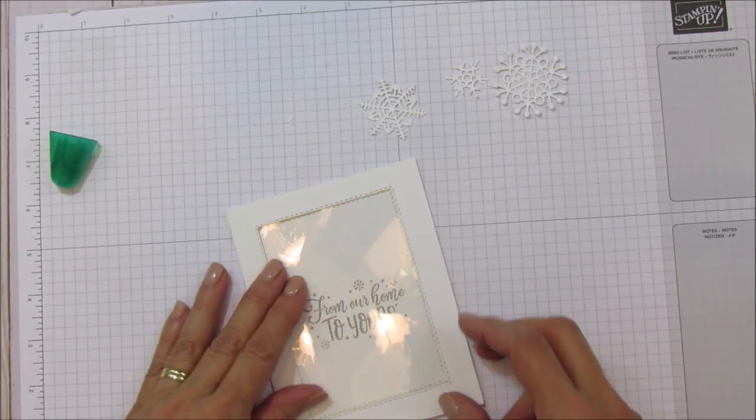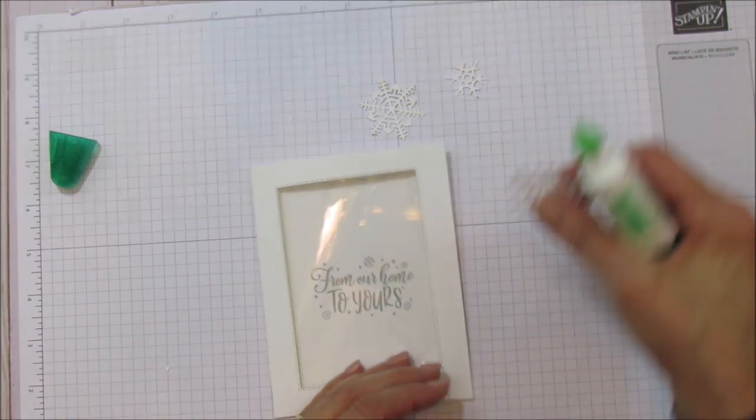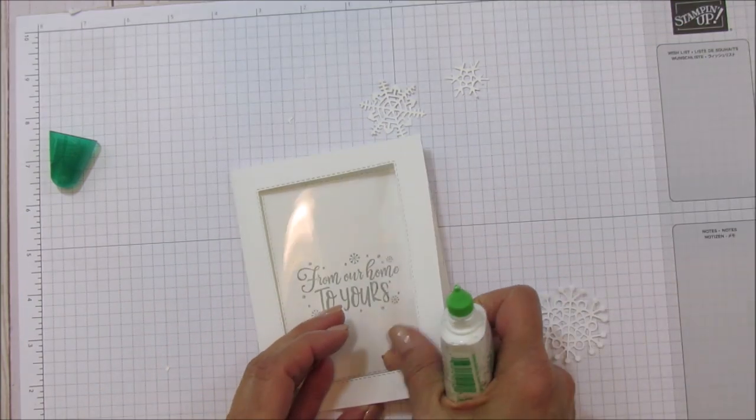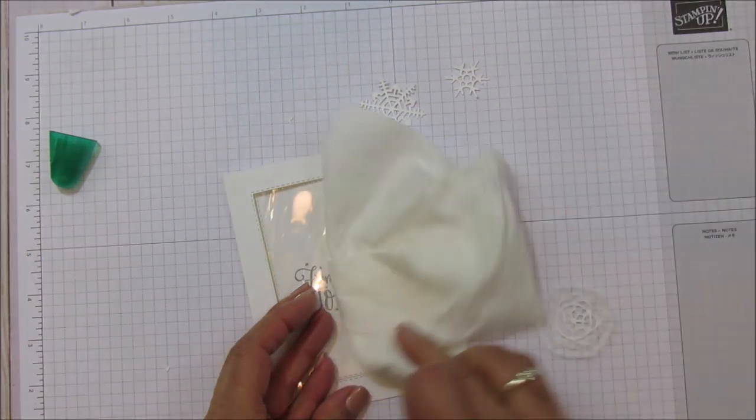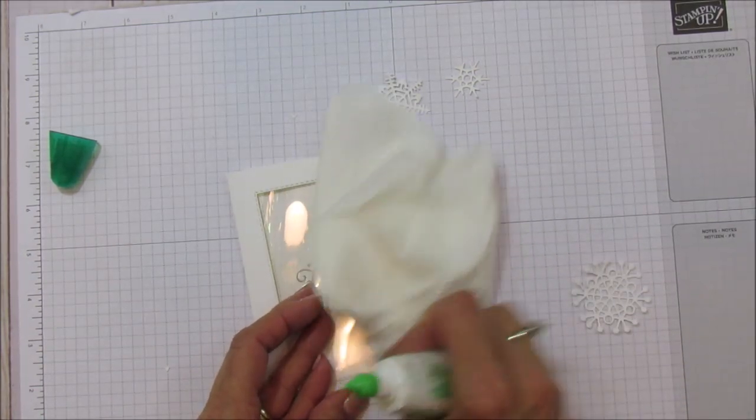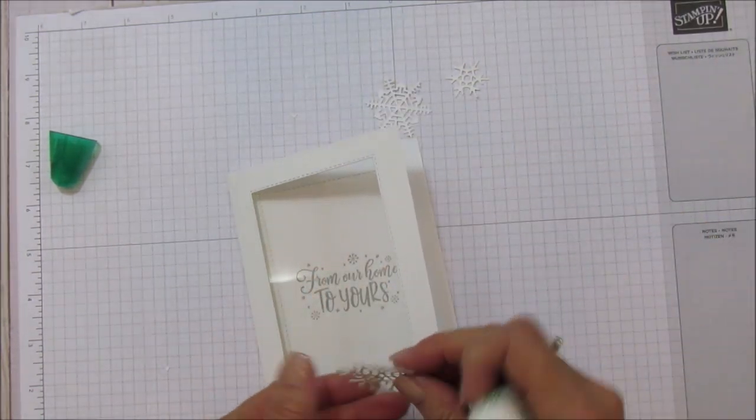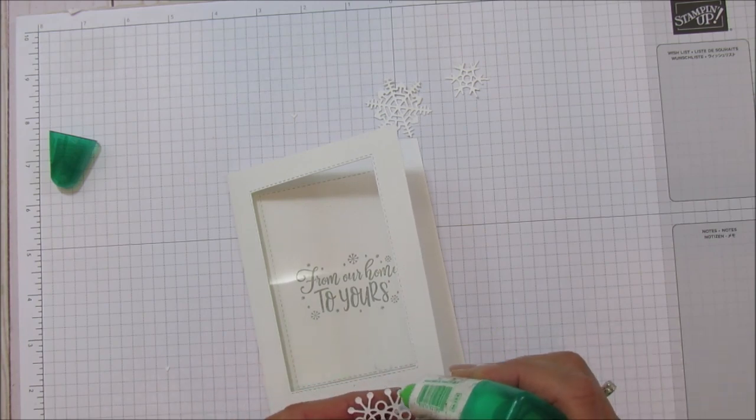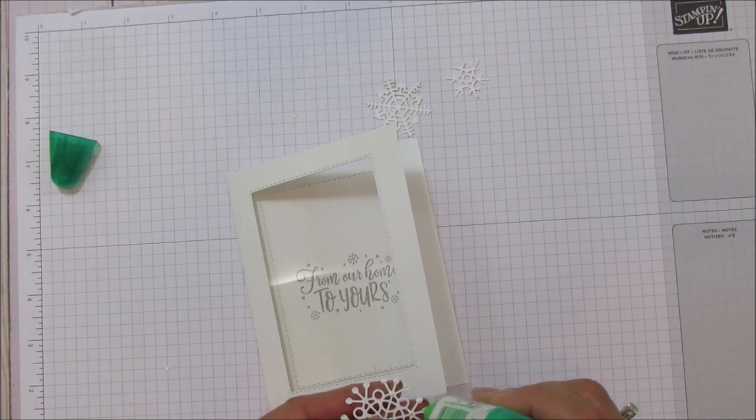We have all three of our snowflakes ready. We'll move this out of the way and we're ready to adhere these to the front. Now we're going to put one on the bottom. I tried to figure where I wanted this exactly.